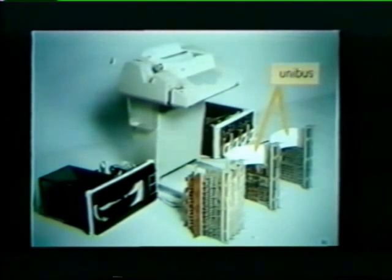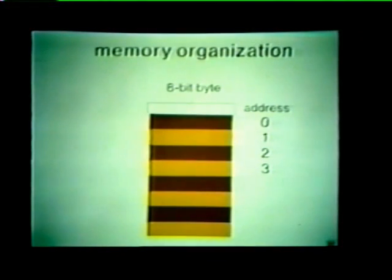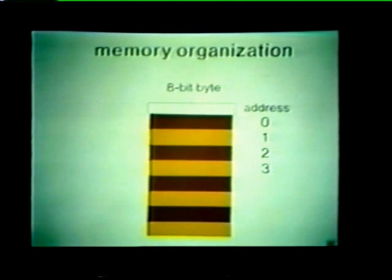Now let's take a look at PDP-11 memories. There are three basic types of memory: core, semiconductor, and read-only memory. The unibus permits a PDP-11 system to accommodate memories with different operating characteristics, speeds, and storage capacities. PDP-11 memory is organized as a series of storage locations, each of which holds eight bits of information — referred to as a byte. Each byte location in memory is given a consecutive address starting with zero.